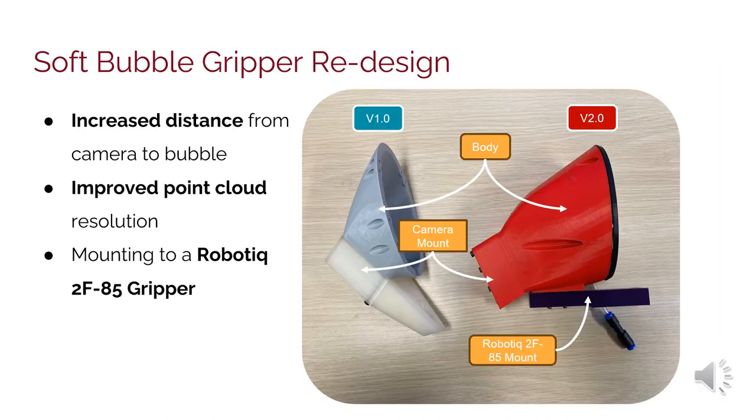The Grippers needed to be redesigned around the RealSense D405 camera. The first iteration consisted of the camera mount, which was also connected to the Robotic Grippers. It had a smaller form factor, but did not capture the point clouds accurately. The second iteration moved the distance from the camera to the latex from 3 cm to 7 cm, which gave a much denser point cloud.